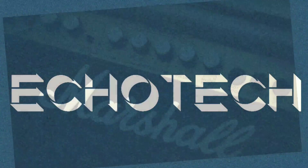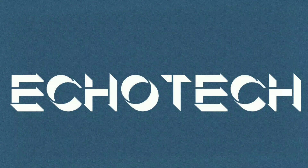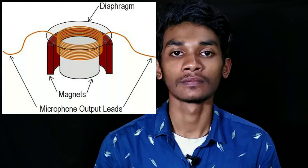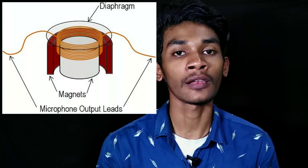We are going to talk about dynamic microphones. A dynamic microphone has three different components: a diaphragm, a voice coil, and a permanent magnet. We are going to talk about the voice coil. When we vibrate the microphone, it generates acoustic energy.